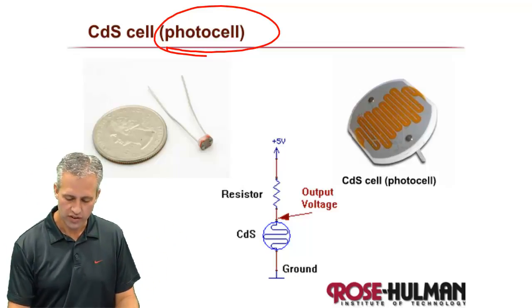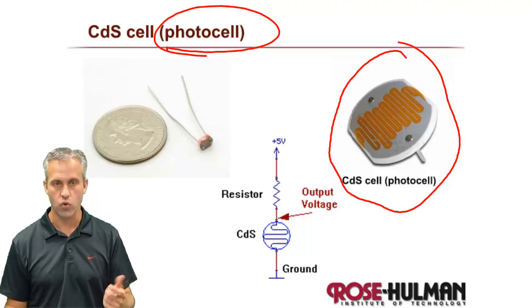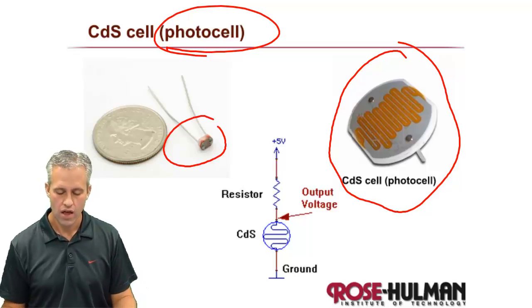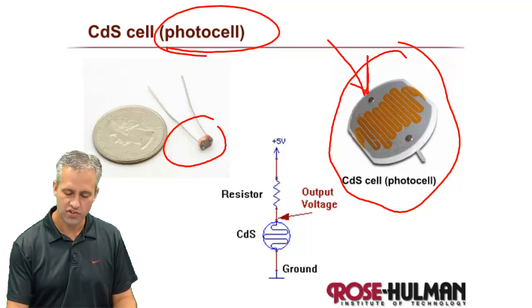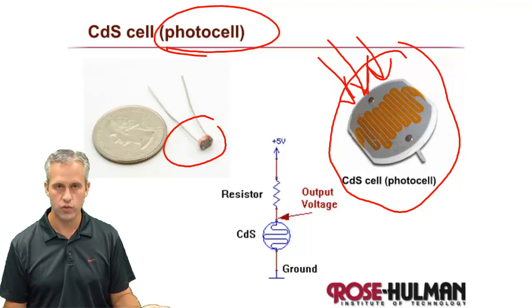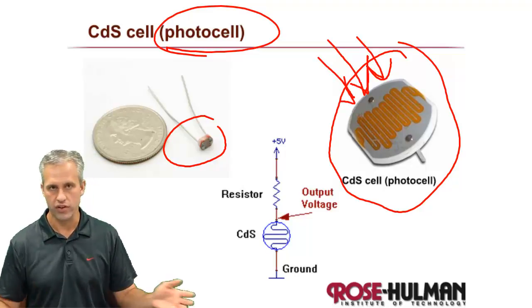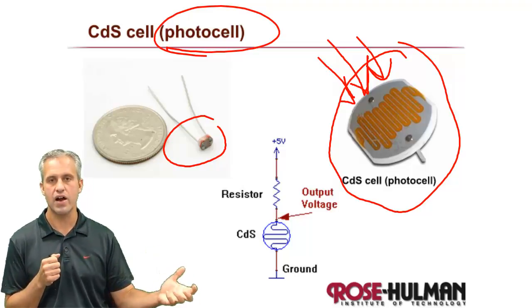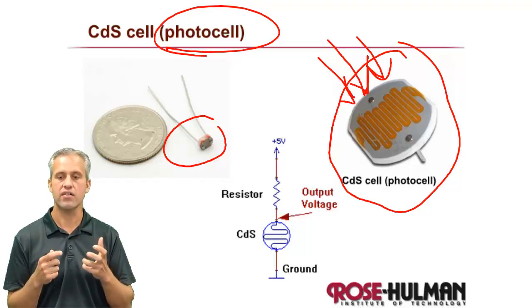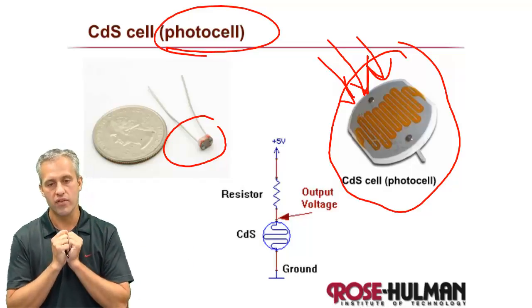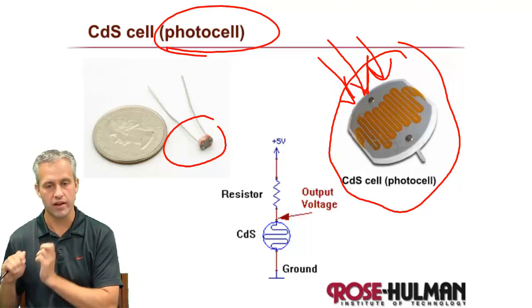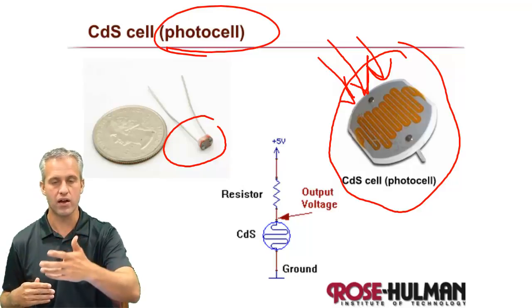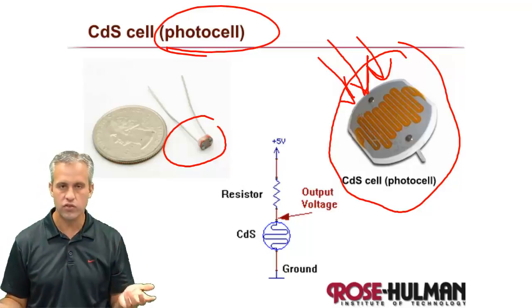So CDS cell, what is it? Here's a big one, this one's like the size of a quarter. And then here's a more typical smaller one. They're often pretty small. And what they do is depending on how much light hits their surface, they change their resistance. And that's all they do. So if very little light hits them, they have a very high resistance, like megaohms. If a lot of light hits them, like you take them out in the sun, then their resistance is going to drop to like a few kiloohms. Maybe 10 kiloohms is low for them, whereas like a megaohm is high for them. So they change their resistance based on light.